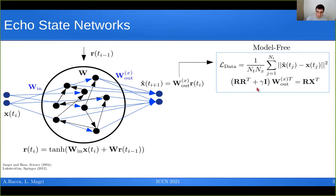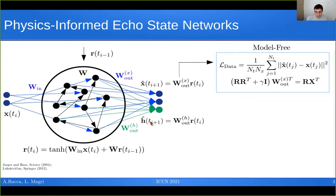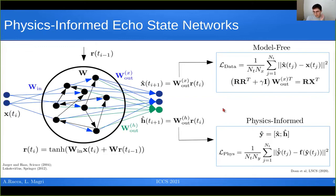This can be done when we have data for the state we want to predict. But what can we do for the hidden state, for which we have no data, but only know the governing equation? We compute the hidden state at the next time step as a linear combination of the reservoir state R through another matrix W-out-h, which we also want to train. This time, we minimize another type of error using the physics-informed architecture proposed by Doan et al. in 2020. What we minimize is the error of the network with respect to the physics — specifically, the mean square error between the time derivative of the network output and the right-hand side of the governing equations.